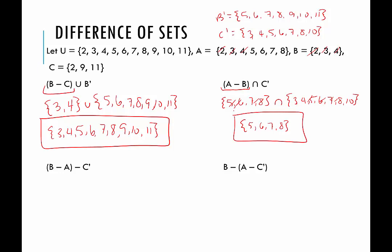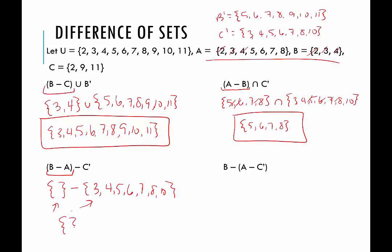In the bottom two examples, all the symbols are the same but I moved the parentheses. First, we look at the difference of B and A — what's left in B after removing everything in A. B contains 2, 3, and 4, but all of those are also in A, so there's nothing left. We represent that with the empty set. Then the difference of the empty set and C complement is still the empty set.